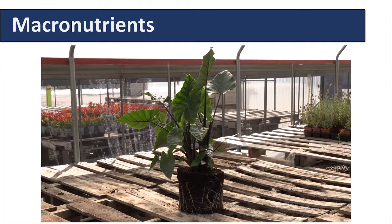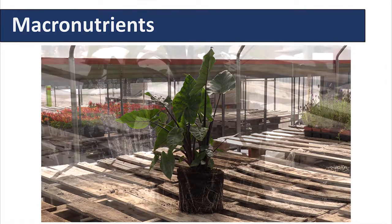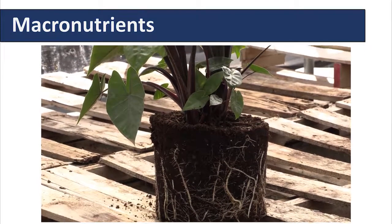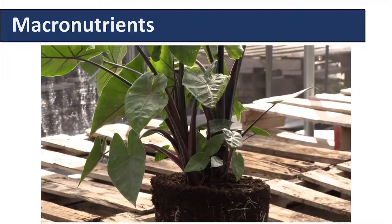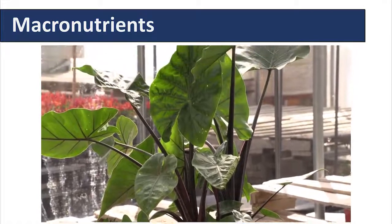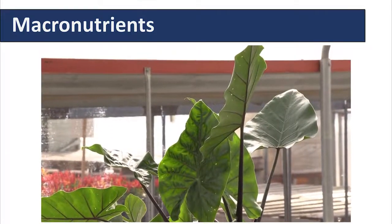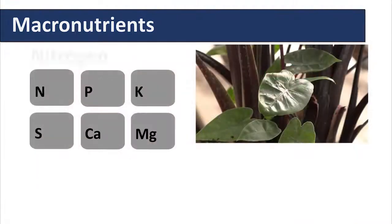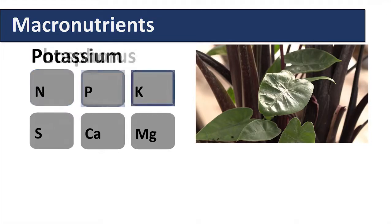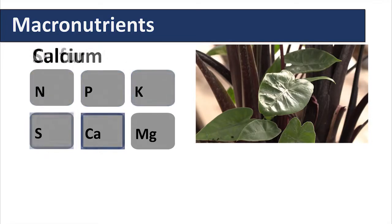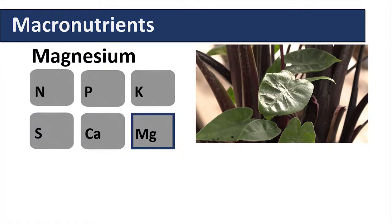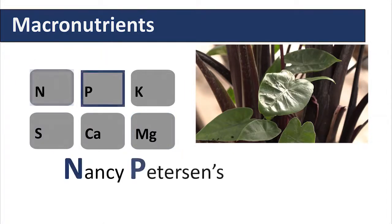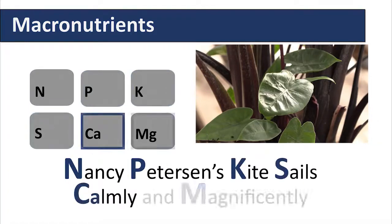Macronutrients are called macronutrients because they are present in plant tissue in larger amounts. They are present in dry tissue and in most lab reports they are listed as a percentage of plant dry weight. These macronutrients are nitrogen, phosphorus, potassium, sulfur, calcium, and magnesium. The best way to remember these is by the phrase: Nancy Peterson's kite sails calmly and magnificently.